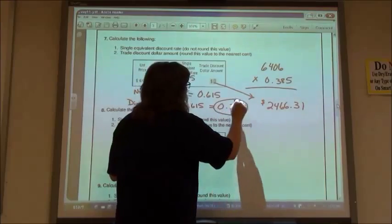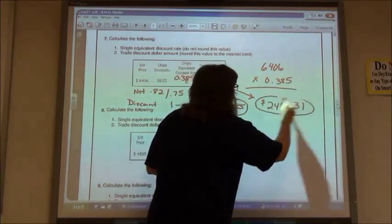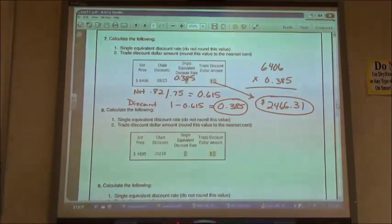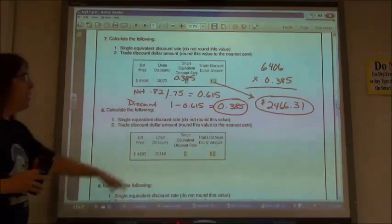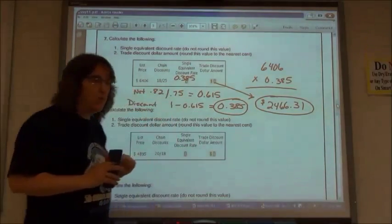So my single discount equivalent rate, and then what my discount is. So in order to find that discount rate, you have to find the net first and then take 1 and subtract that value, 100% minus what we had there.